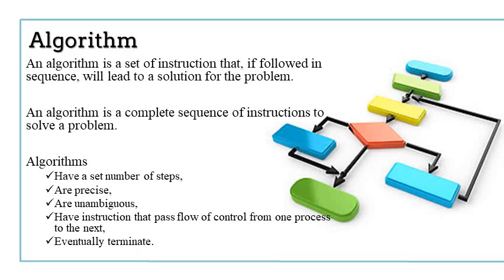Now algorithms have some characteristics. For example, they have a set number of steps. They are always precise and unambiguous. That means they are very clear. They have instructions that pass flow of control from one process to the next. And eventually they terminate, which means they end. Your problem is solved.